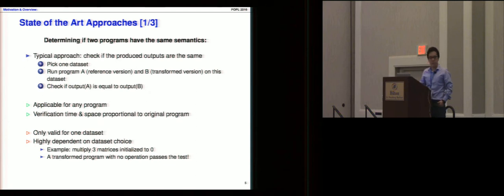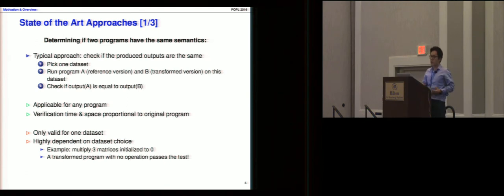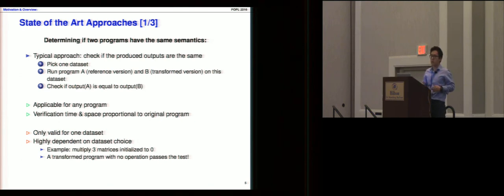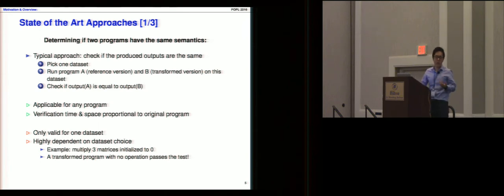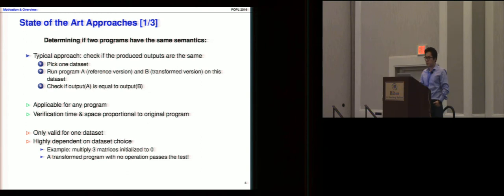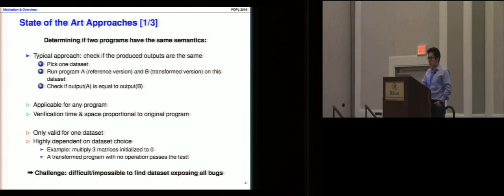I would like to introduce three state-of-the-art approaches. The first is to check the output of two programs: you pick a dataset, execute both programs, and compare their outputs. This approach is applicable to any program and its time and space cost is proportional to the original. However, it is only valid for that one dataset and highly dependent on the dataset choice — for a naive matrix multiplication example, setting all data to zero will pass all tests trivially.